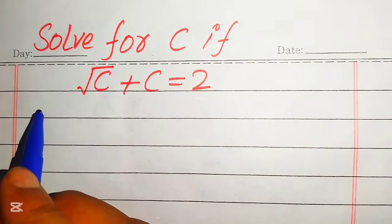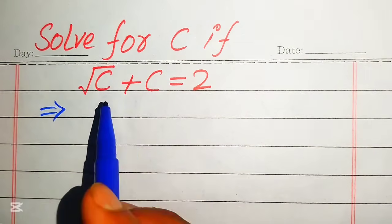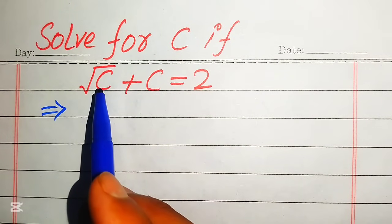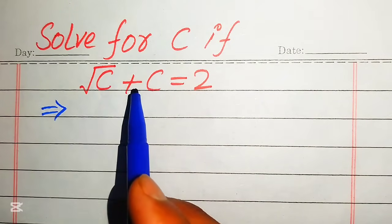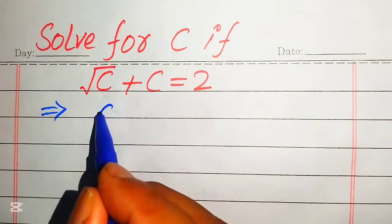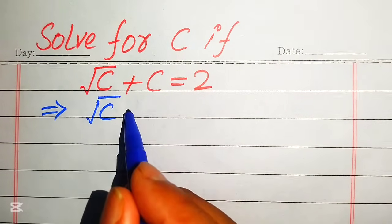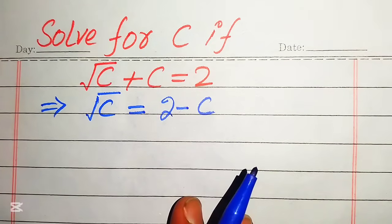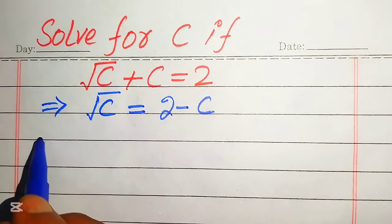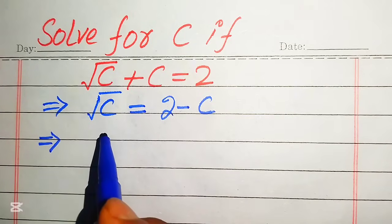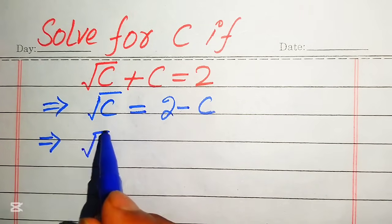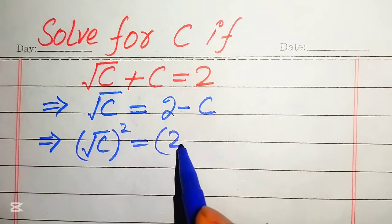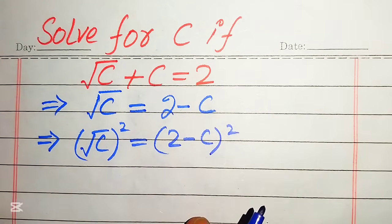The very first step we are going to do is eliminate the square root sign from the left hand side. For this we will move the plus c to the right hand side, and when you move this c to the right hand side, it will be written as square root of c equals 2 minus c. Now in order to eliminate this square root sign we need to take the square on both of the sides.